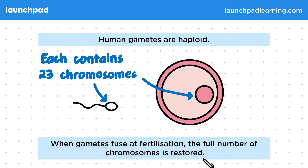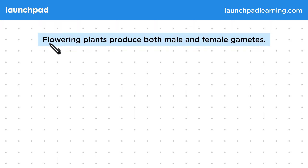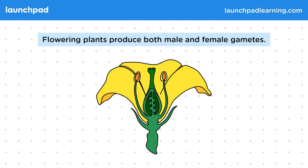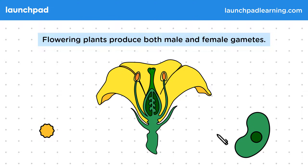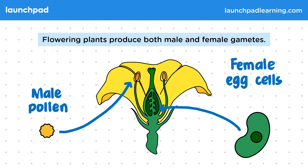What are the gametes called in plants? Flowering plants produce both male and female gametes. This diagram shows a flower head. The male pollen is found on the plant head, and the female egg cells are found around here. These are also called ova.